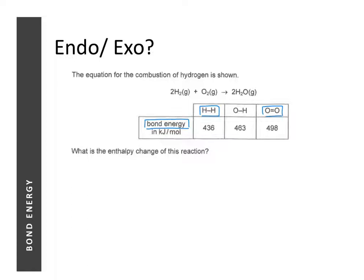For most chemical reactions involving both bond breaking and bond forming, we need to compare the total energy required for bond breaking versus the total energy given out during bond forming. The equation involved is: ΔH = bonds broken − bonds formed.